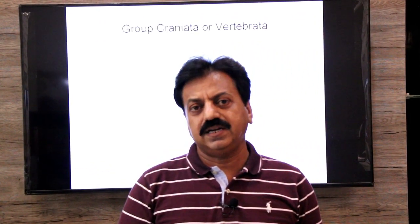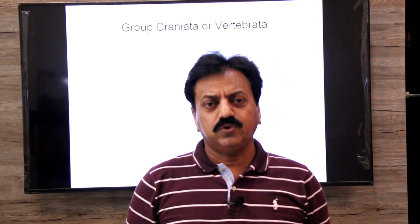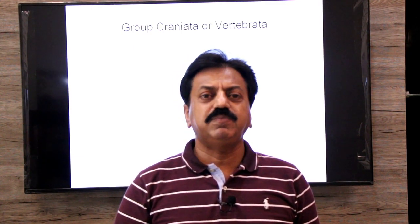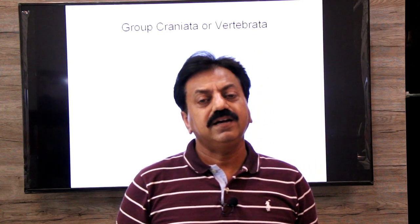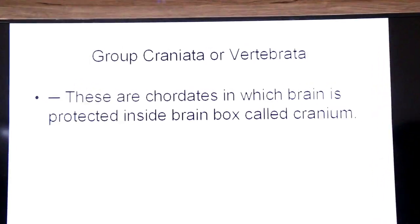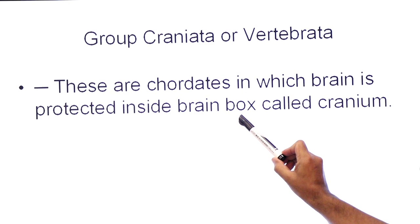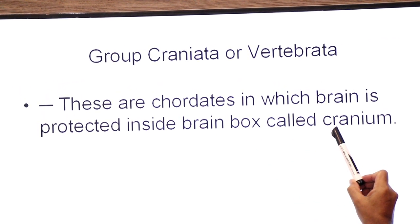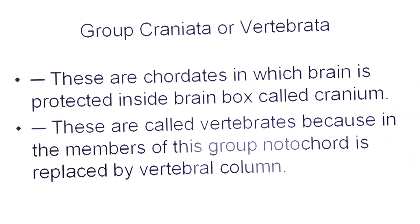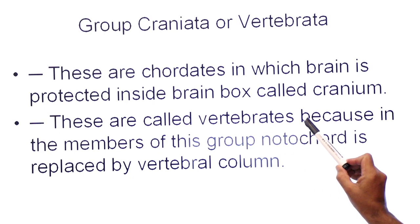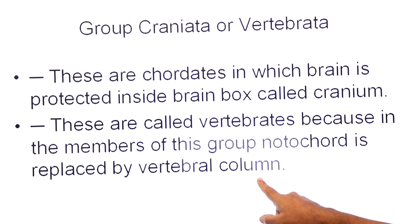In Craniata, the cranium or brain box is present. In the embryonic stage, a notochord is present, but it is replaced by the vertebral column. Due to the presence of the vertebral column, they are also called Vertebrata. So these are chordates in which the brain is protected inside a brain box called the cranium, and due to the presence of the cranium, they are known as Craniata.